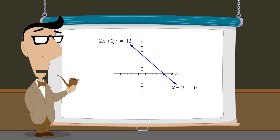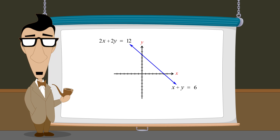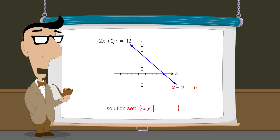Since both equations have the same solution set, the solution set of this system is identical to the solution set of either equation. Since the bottom equation is the simpler of the two, we will use it to define the solution set. Using set builder notation, we can say that the solution set is the set of all ordered pairs x comma y such that x plus y equals six.